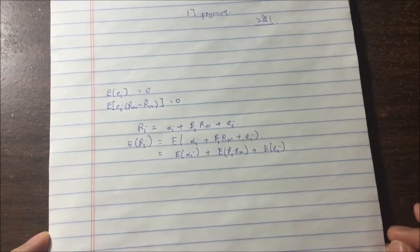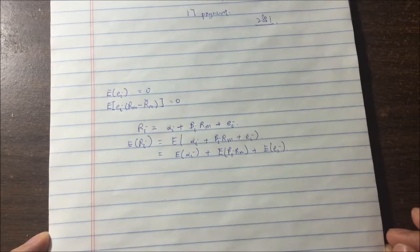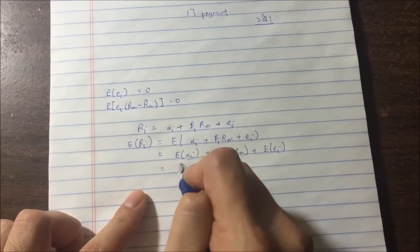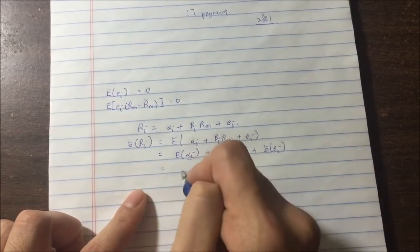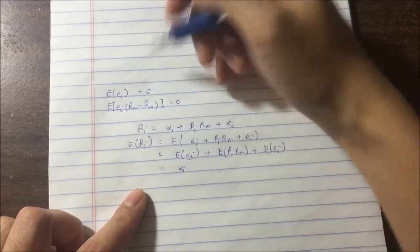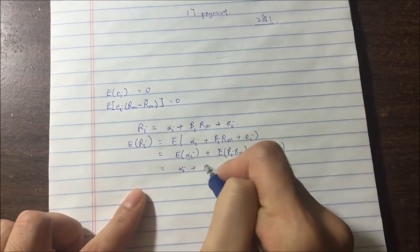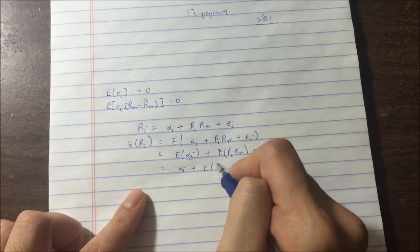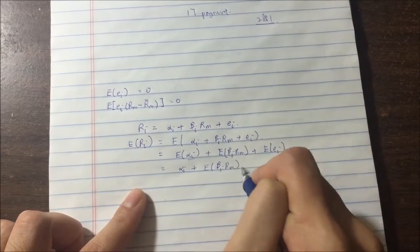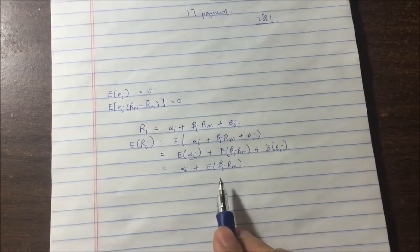So we already know that this is a constant. So this is a known part. Expected return of a known constant is just a constant. And this, we know that this is equal to zero. So after simplification, this is what we have so far.